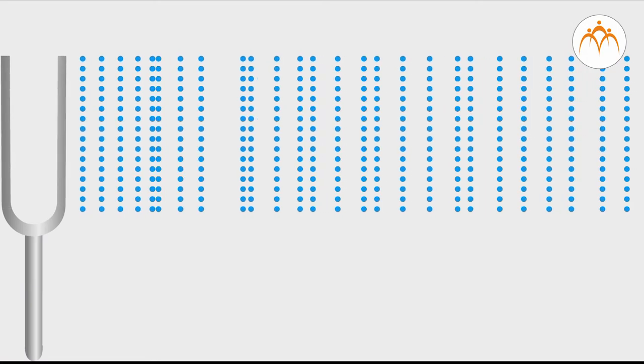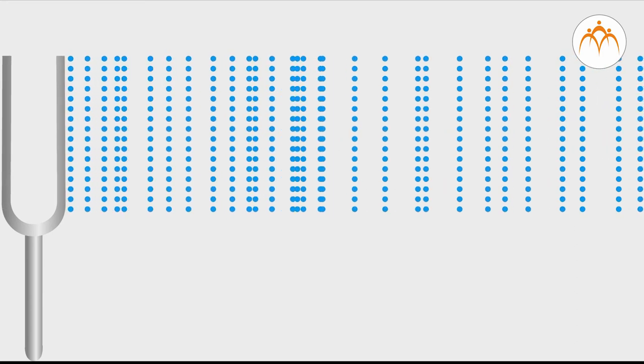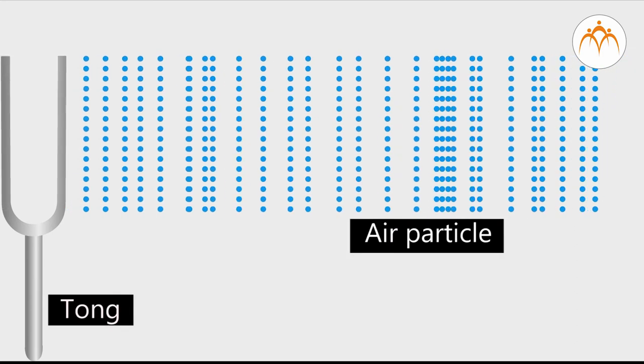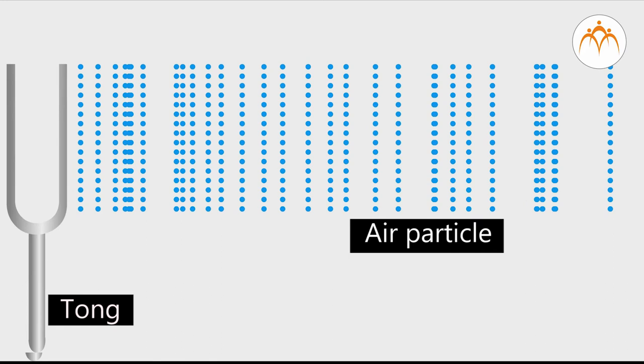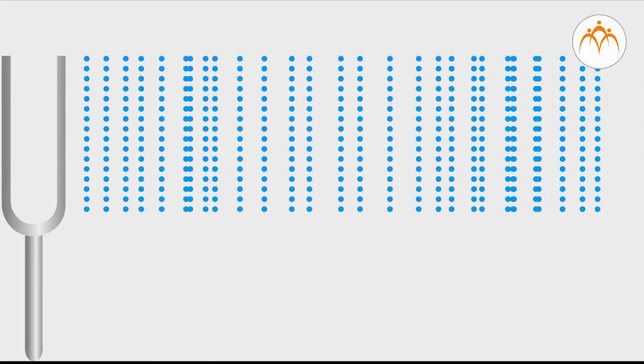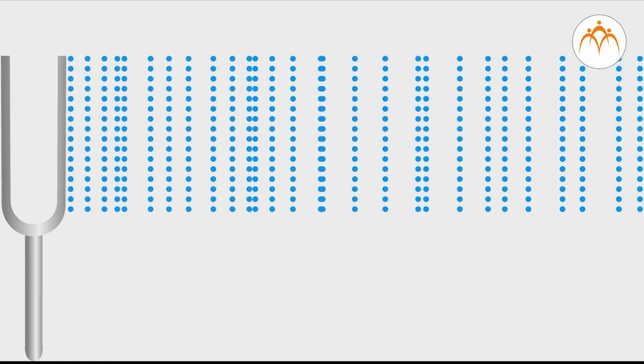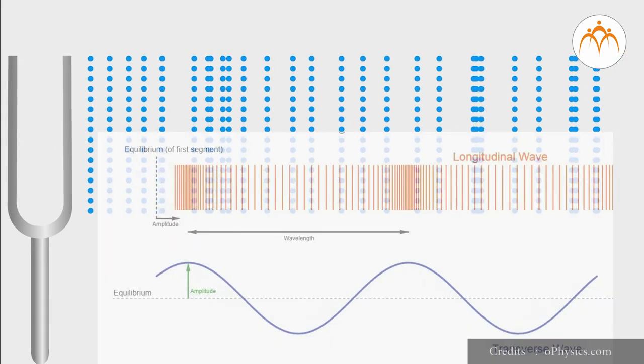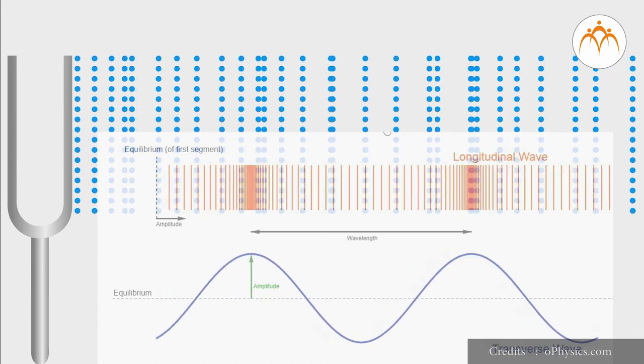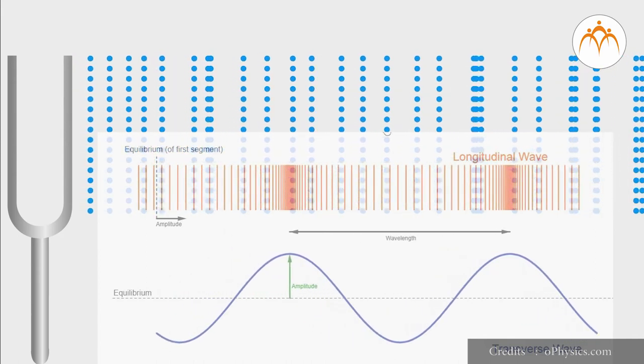As you know, the tong of the fork vibrates. This is oscillatory motion. This motion moves the air particles around it. These air particles move to and fro. Energy due to vibration is transported through air without transporting air particles. If you plot movement of all air particles due to the fork, it looks like a wave.